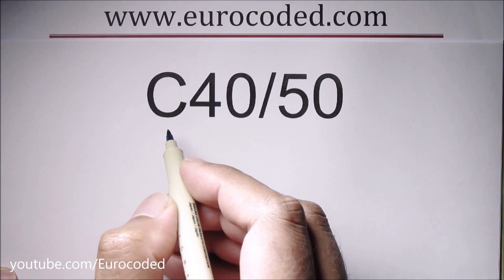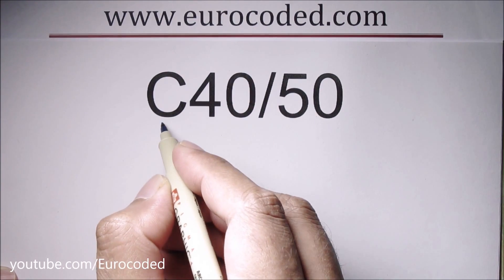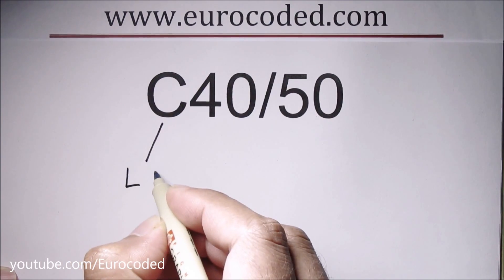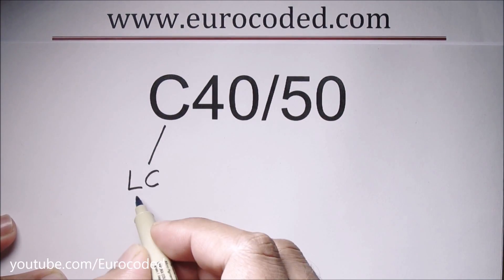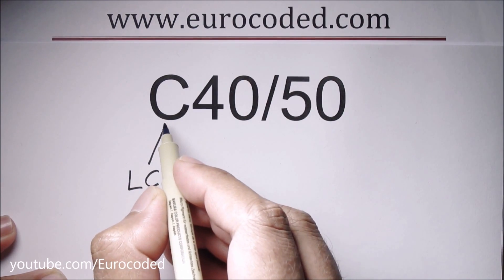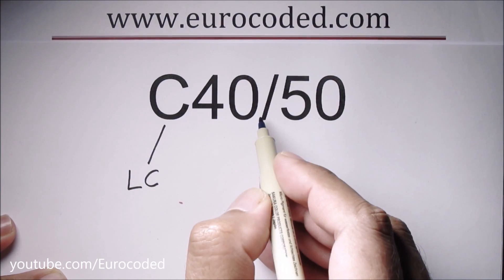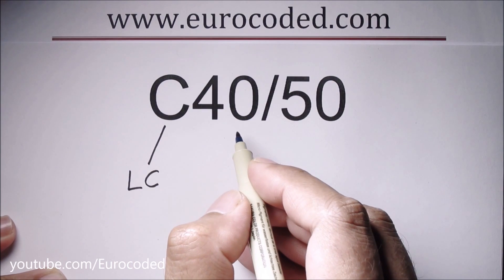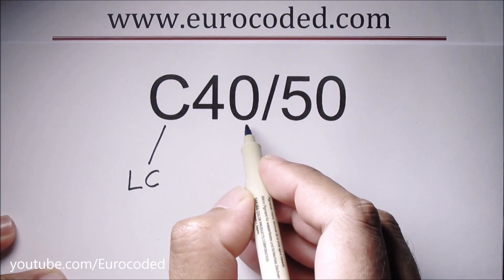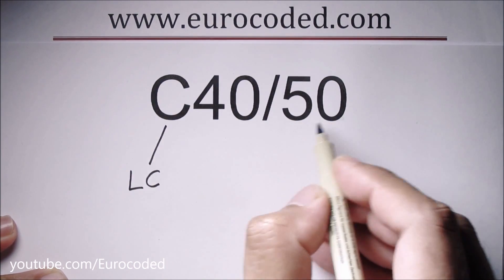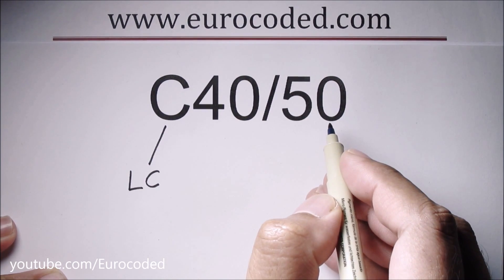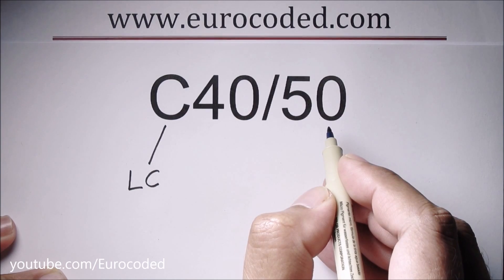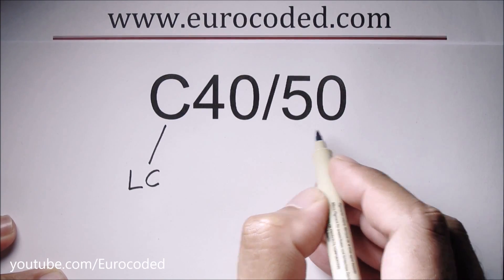If we specify lightweight concrete, this would become LC. The number between the letter or letters, in this case C and forward slash, tells us the characteristic compressive cylinder strength of concrete at 28 days. And the number after the forward slash tells us what the characteristic compressive cube strength is for this concrete.